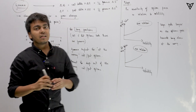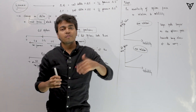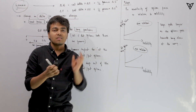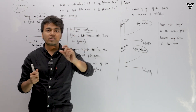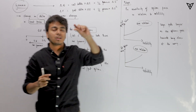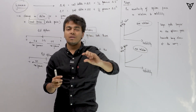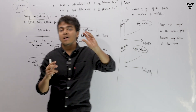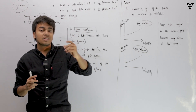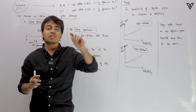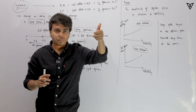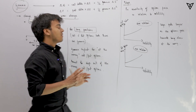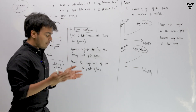Gamma is basically a second order differentiation. Delta was measuring the change in the option price vis-a-vis the asset price. But gamma witnesses the change in delta for a given change in asset price.